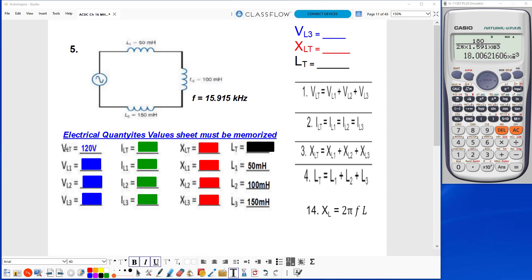So I've got my total voltage of 120 volts, and I've got my three inductor values: 50 millihenries, 100 millihenries, and 150 millihenries. In this circuit, I'm given inductance, so I'll have to find inductive reactance using formula 14.